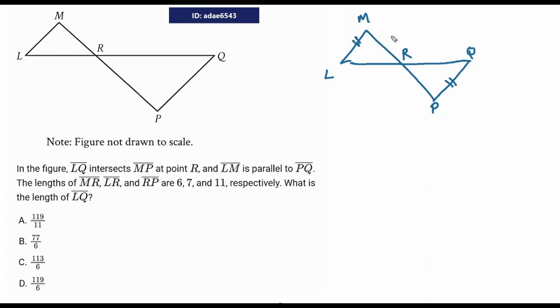MR is 6. LR is 7. And RP is 11. What's the value of LQ? So we're looking for this big line here, which sucks some more.